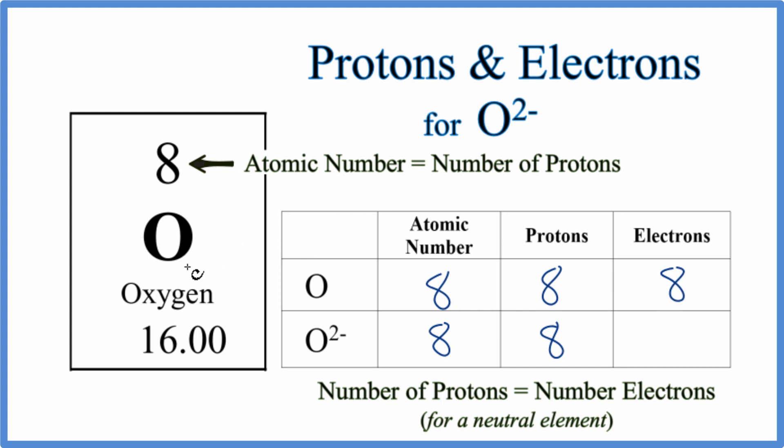This is a neutral element here on the periodic table. For the O2 minus, think of it this way. We have 2 extra negative charges, 2 extra electrons. So we have 2 more electrons, 8 plus 2, that gives us 10 total electrons for the O2 minus anion.